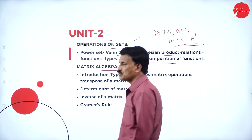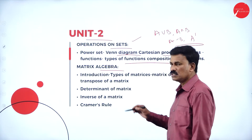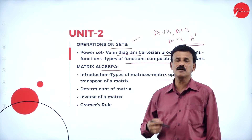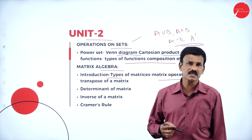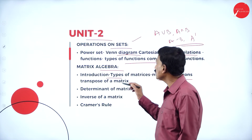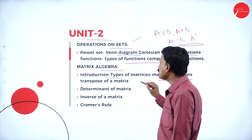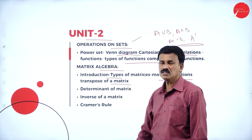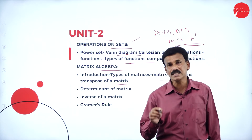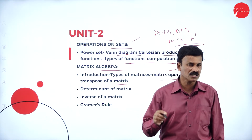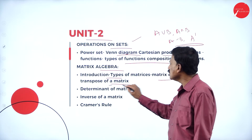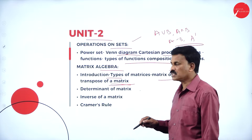Then functions — types of functions and the important concept of composition of functions. The next concept in unit 2 is matrix algebra. First, the definition of a matrix and types of matrices: row matrix, column matrix, null matrix, square matrix, scalar matrix, diagonal matrix, symmetric matrix, and skew-symmetric matrix. Also the transpose of a matrix and problems based on operations like addition, subtraction, scalar multiplication, and matrix multiplication.